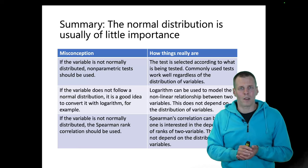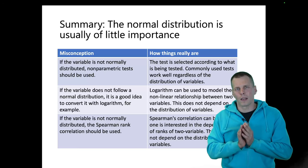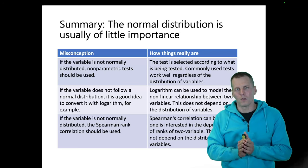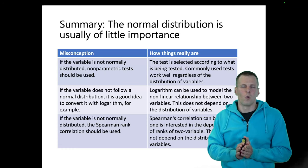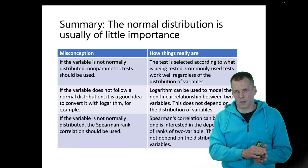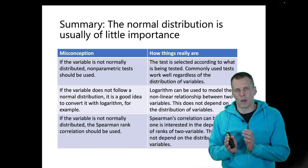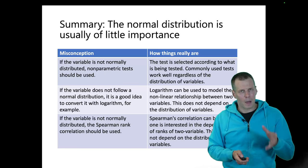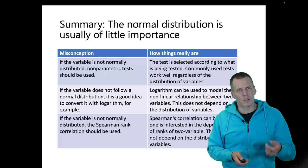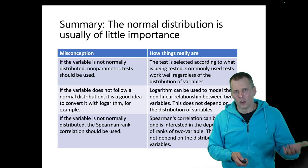To summarize: the normal distribution is usually of little importance. You don't really need to care about normality when picking which statistical test to apply or how to characterize the relationship between two variables. But we need to ask: is normality always unimportant? Do we ever have to care about it?